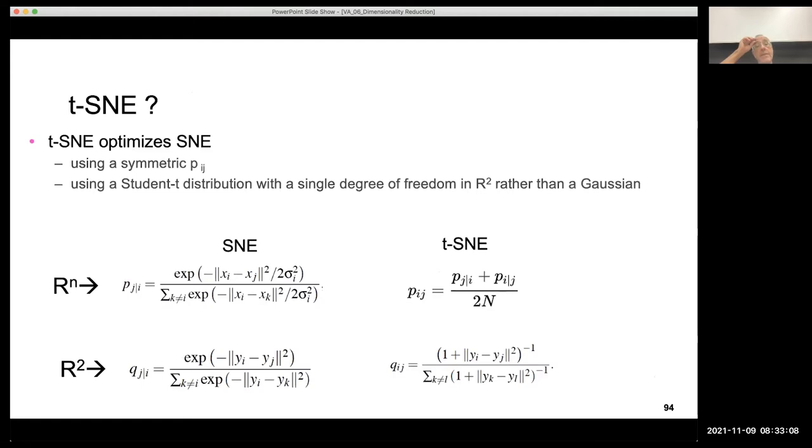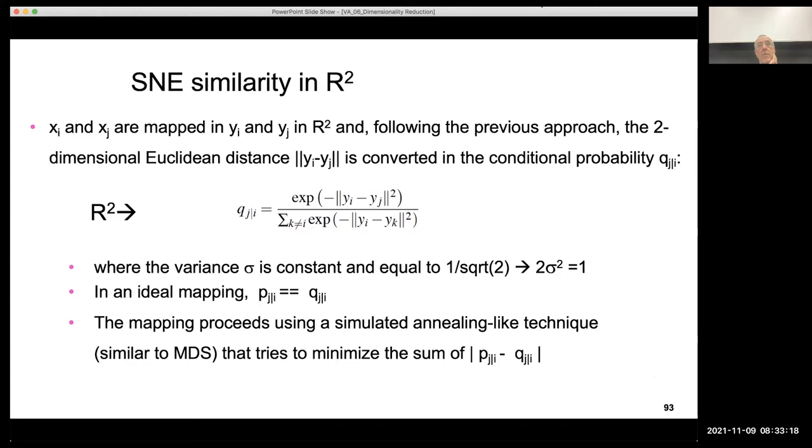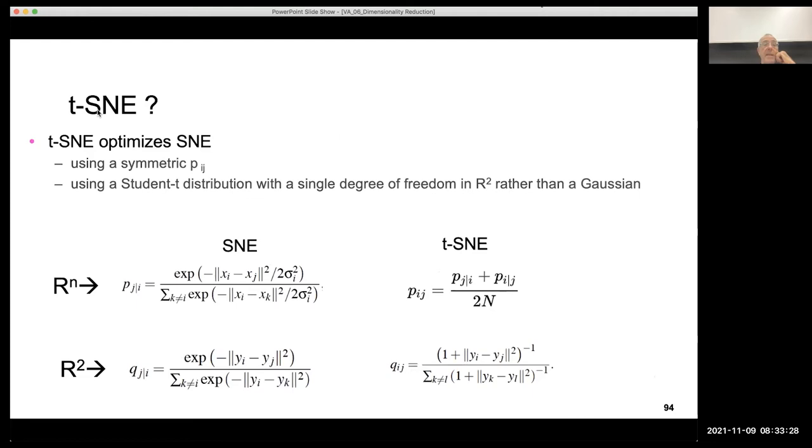The technique uses a simulated annealing technique looking for the minimization of a stress function or a cost function. That may be just the difference between the similarity in the multidimensional space and the similarity in the bidimensional space. It is quite close to MDS. And this is the initial definition of SNE. After that, someone introduced t-SNE, because this is very heavy from the computational point of view.